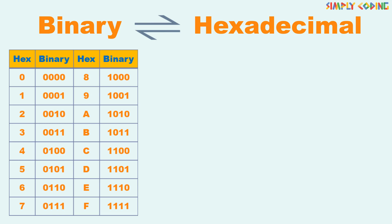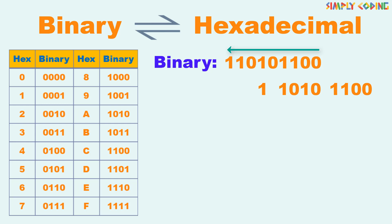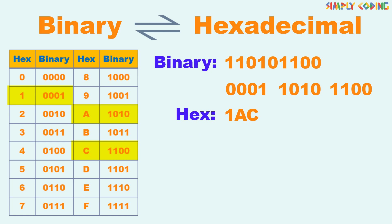Next, let's learn how to convert binary to hexadecimal and vice versa. Before doing the conversion, you should know the binary equivalent for hex numbers 0 to F — let's note it down first. Note that each hex number is represented by 4 binary digits. Let's take a binary number which we want to convert to hexadecimal. Split the binary value into groups of 4 starting from the right-hand side. If the last group has less than 4 digits, then just append 0 at the end. For each group of 4, consult the table to find the matching hex value and replace groups of 4 binary digits with 1 hex value. So here the answer is 1AC in hexadecimal.